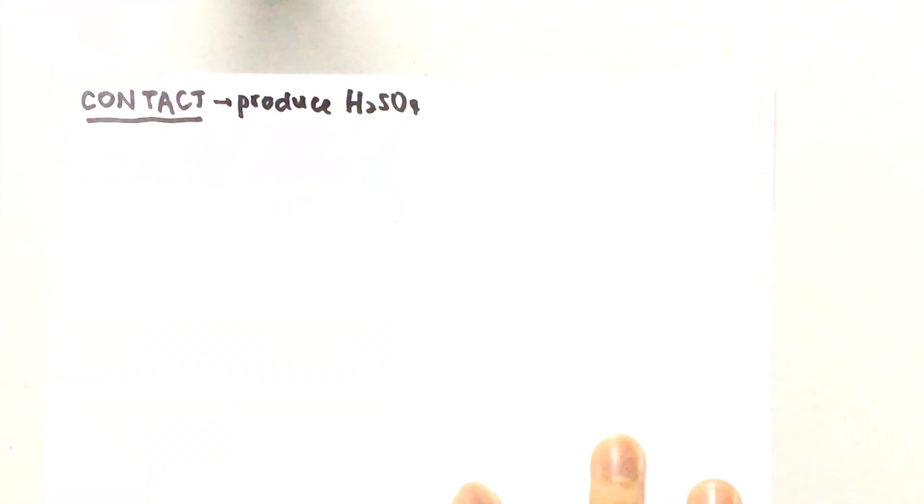Morning everyone, today we'll be talking about the contact process and all the steps involved in it. The contact process is to produce sulfuric acid because sulfuric acid is very useful to us in the sense that it can be used to produce a lot of things like detergent, paint, and so on.